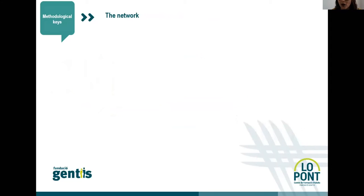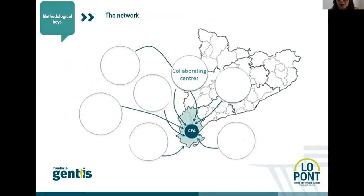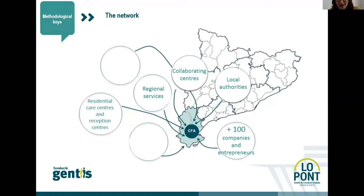In order to carry out all the work, it is necessary to build a strong network with the different agents in the territory. They must contribute to the recruitment and referral of the young people to services and promote their involvement in the community. Examples include collaborating centers, local authorities, more than 100 companies and entrepreneurs, regional services, residential care centers, reception centers for non-accompanied young migrants, and the government of Catalonia.